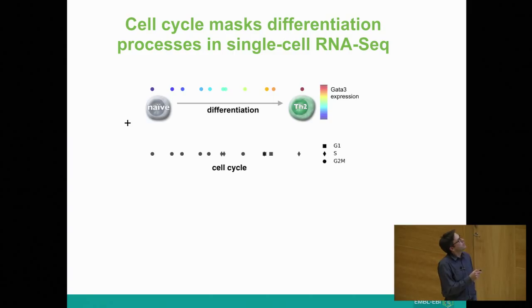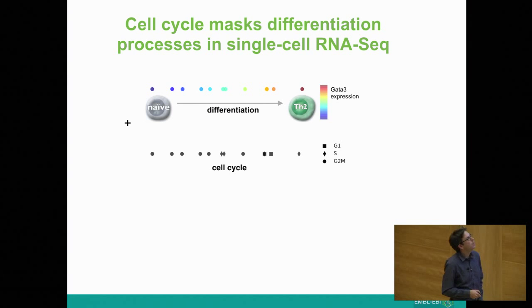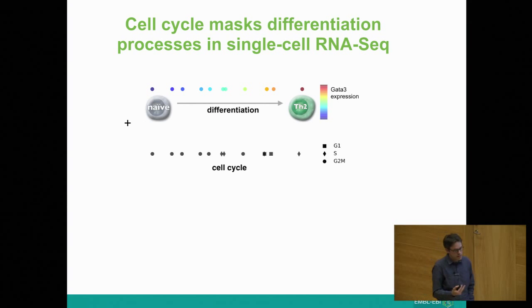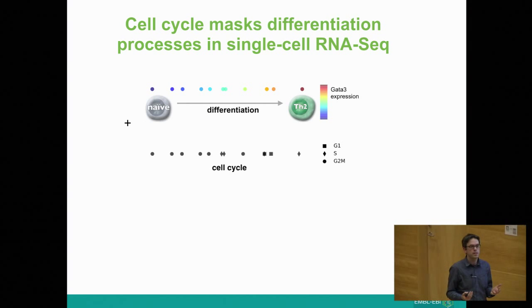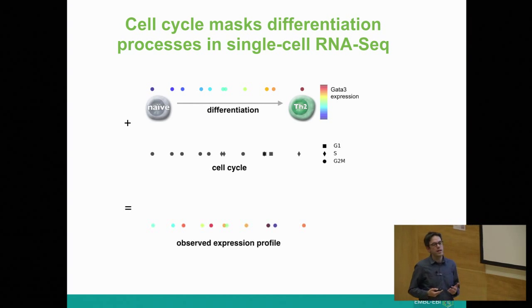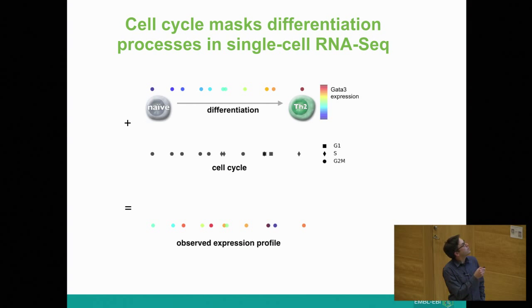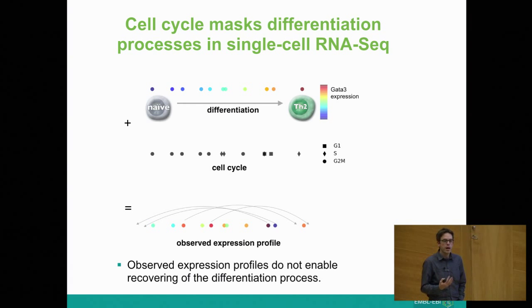Here's a cartoon of one example: T cell differentiation from a naive state to Th2 cells. Every dot here is a cell, and we want to order these cells based on GATA3 expression — a canonical T cell differentiation marker — where GATA3-low cells are naive and GATA3-high cells are differentiated. The challenge is that these cells also have cell cycle properties: G1, S, and G2M phases. Because these two processes occur simultaneously, the actual expression profile looks very different from the idealized picture, and ordering cells based on these data gives very different answers.